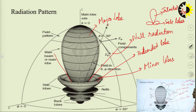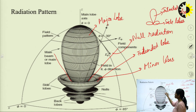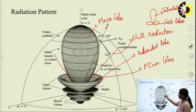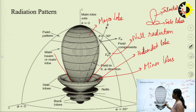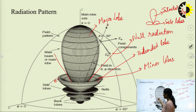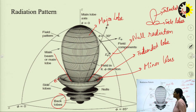The parameters of the radiation pattern are: major lobe — where there is maximum radiation; minor lobes — except the major lobe, other lobes are minor lobes; side lobes — except the intended or main lobe, other lobes are side lobes; and back lobe — 180 degrees to the side lobe is known as the back lobe.